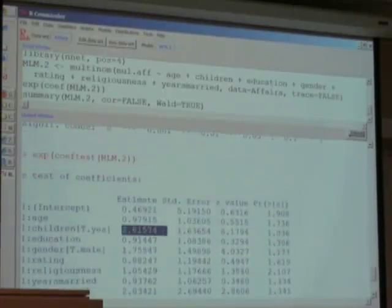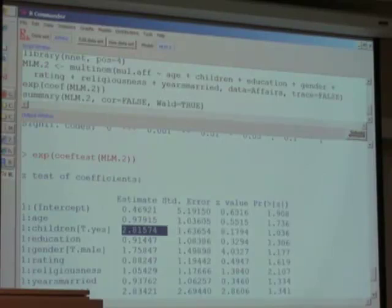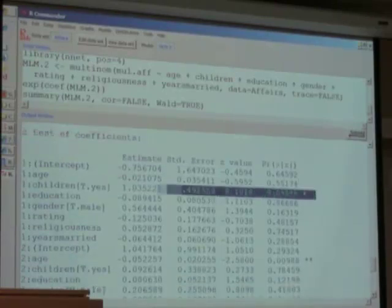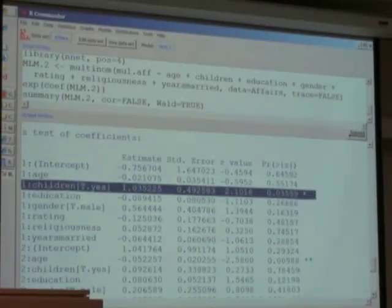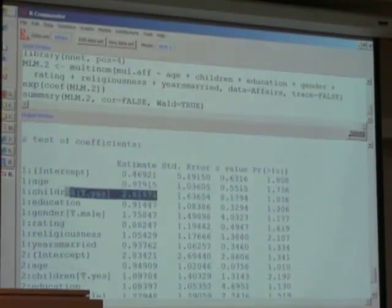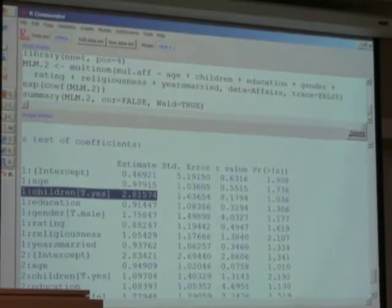Okay, so do not look at these standard errors and z values. Here, just look at the estimates. Now, I have used the term exponential. It has exponentiated the standard errors and z values as well, which is not the intent. But we live with it. The real values are here, standard errors and z values. So we know that the only significant variable is children. And if you take the exponential of it, it comes out right here. In fact, having a child increases the odds of having an affair by 2.8 times.